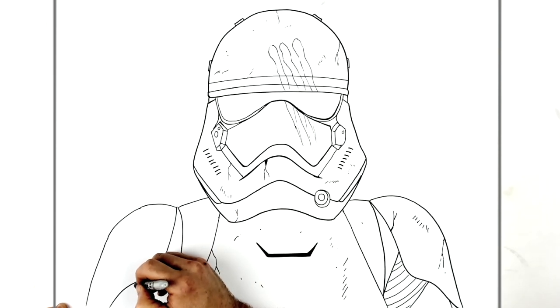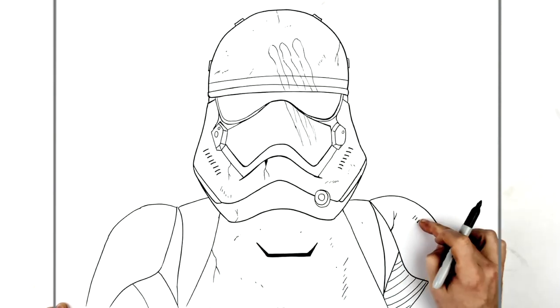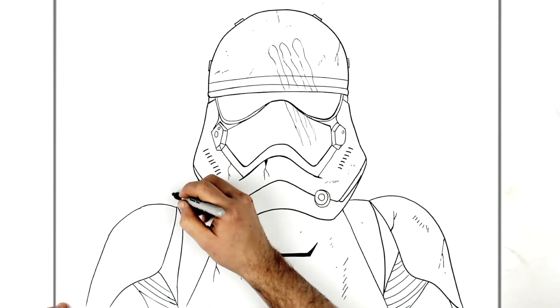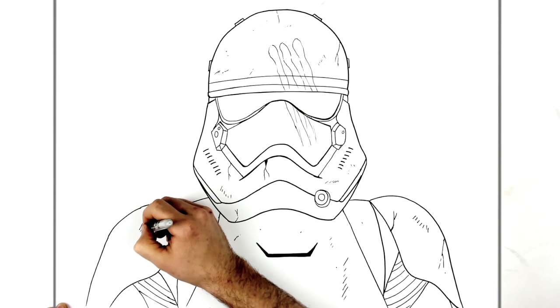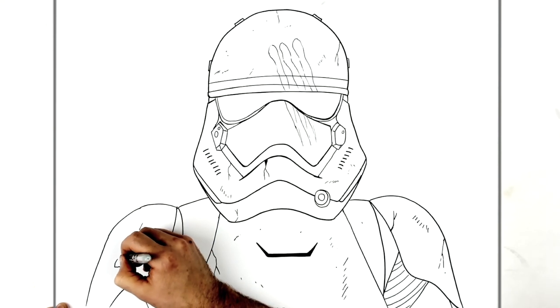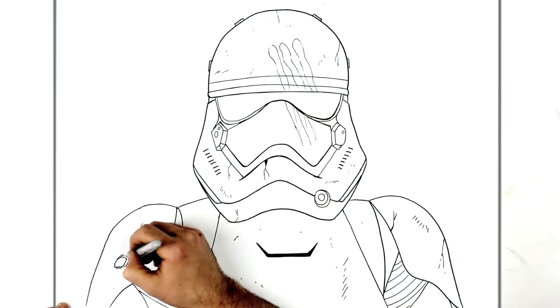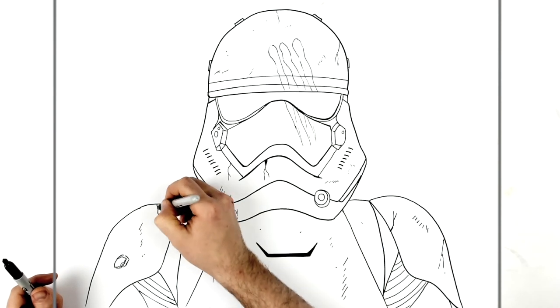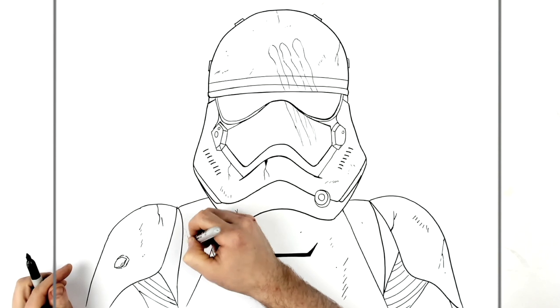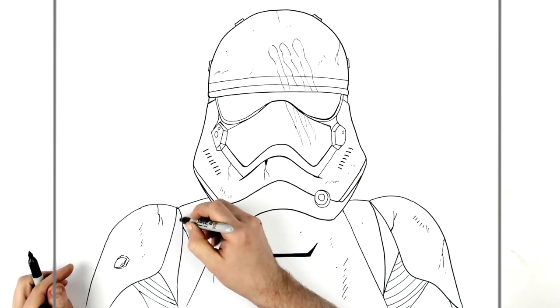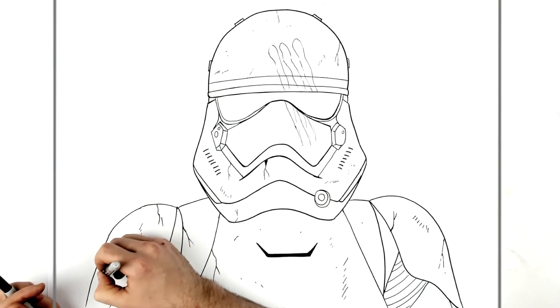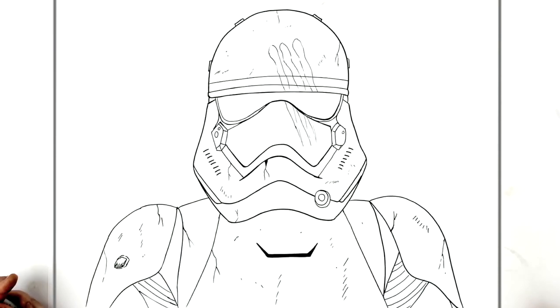And then that sort of shoulder strap in there. And then some more around there. So we see more of this rubber stuff, like so. Maybe a bullet hole or something, not a bullet hole, a laser beam hole.